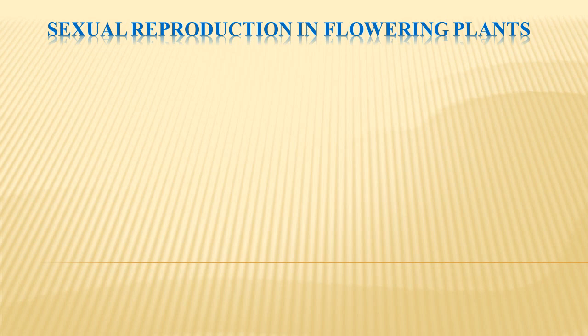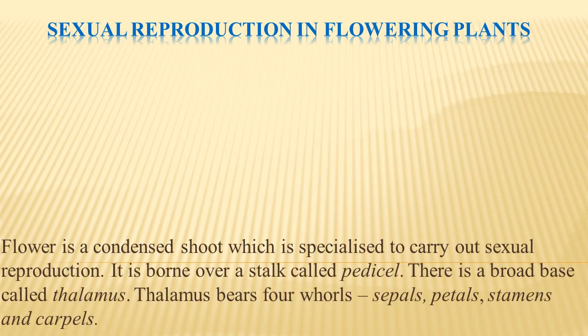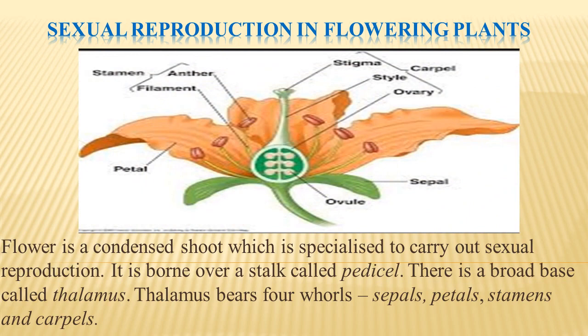First we shall look into how sexual reproduction takes place in flowering plants. We know that flowers are the reproductive part of the plants — when the flower starts bearing we say the plant is in a mode of reproduction. A flower is a condensed shoot specialized to carry out sexual reproduction. The flower bears a stalk known as pedicel and there is a broad base called thalamus.